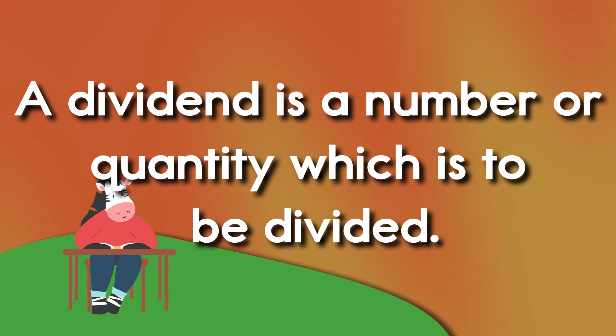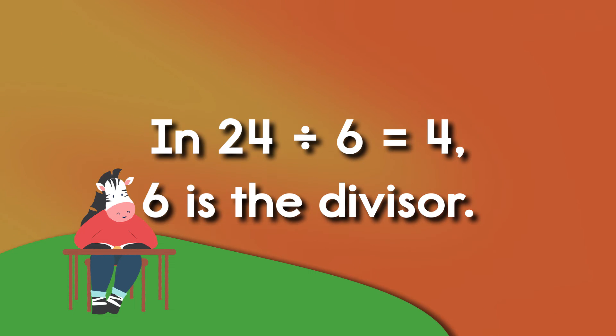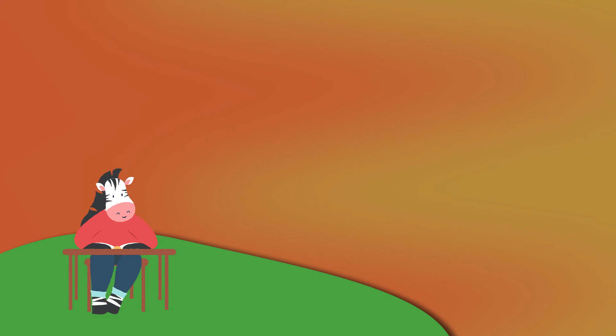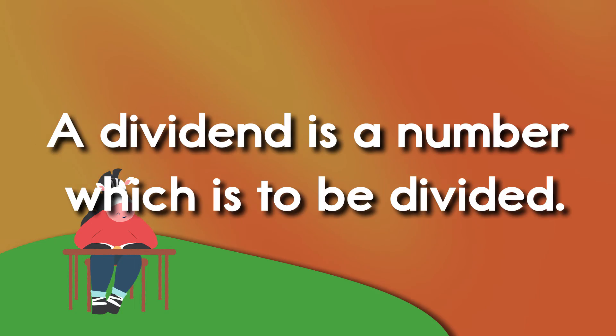A dividend is a number or quantity which is to be divided. In the problem 24 divided by 6 equals 4, the number 24 is the dividend. A dividend is a number which is to be divided.